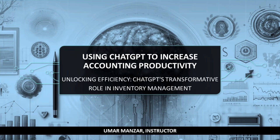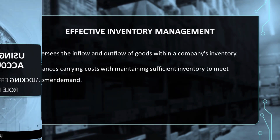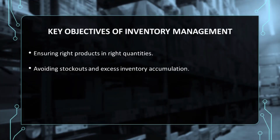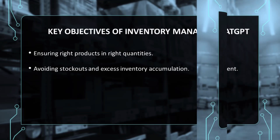Before delving into the myriad applications of ChatGPT, let's first establish a comprehensive understanding of what inventory management entails. Inventory management encompasses the intricate process of overseeing the inflow and outflow of goods within a company's inventory, striking a delicate balance between carrying costs and maintaining sufficient inventory levels to meet customer demand. It is imperative for companies to ensure they have the right products in the right quantities precisely when they are needed, in order to avert stockouts or prevent accumulation of excess inventory.